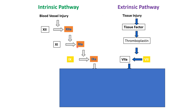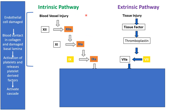This is the coagulation cascade, which is the enzymatic process in which one factor activates another in a particular fixed sequence. There are three types of pathways: intrinsic pathway, extrinsic pathway, and common pathway. The intrinsic pathway is called intrinsic because injury is from inside the blood vessel, and endothelial damage causes blood contact with collagen and the damaged basal lamina, activating platelets and releasing platelet-derived factors which activate the intrinsic pathway.